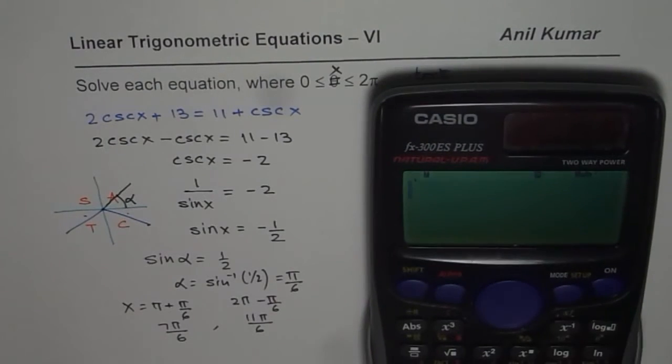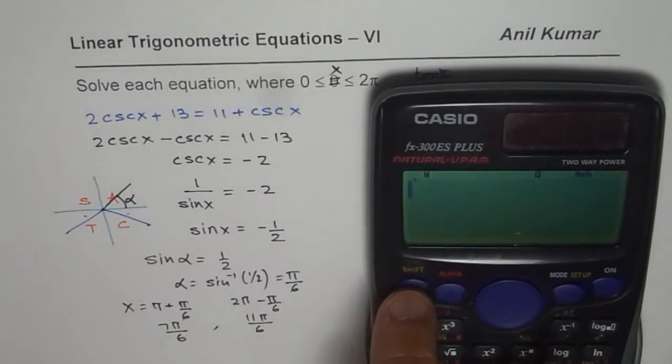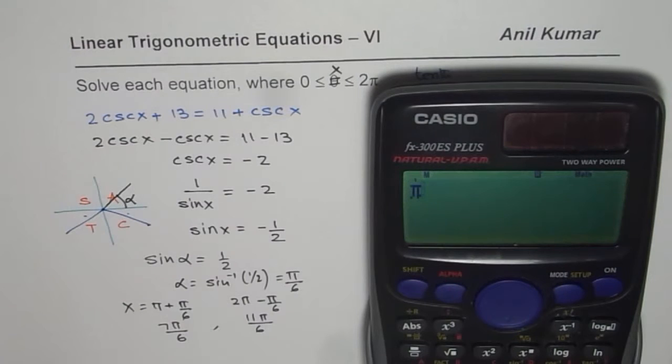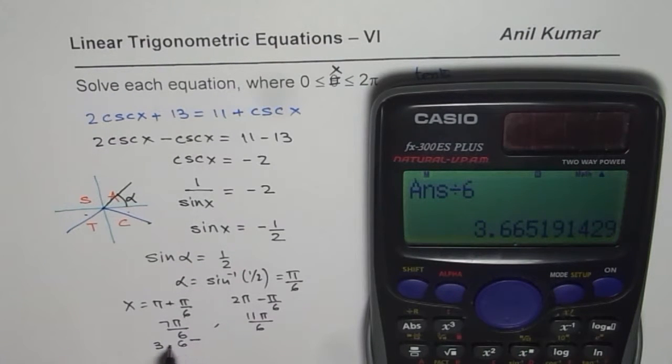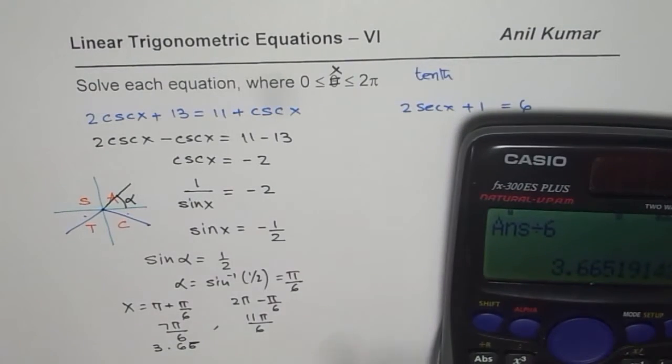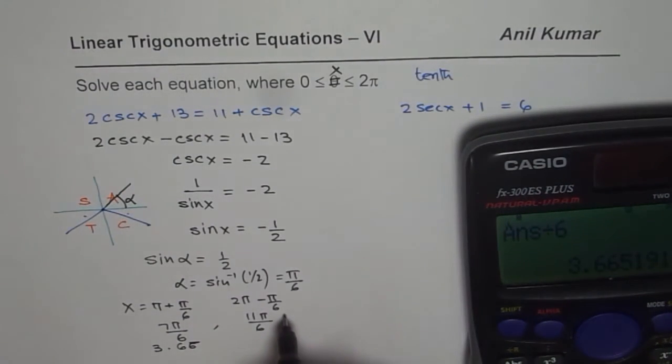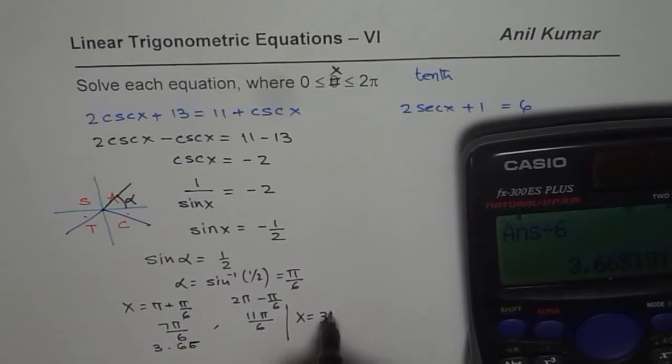To get the decimal values, we do π × 7 ÷ 6, which we can convert to decimal values. This is 3.665 or 3.6, which rounds to tenth place as x = 3.7 radians. That is one answer.